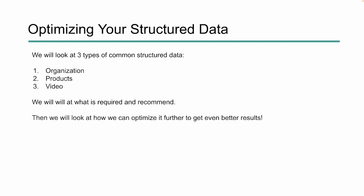So it's good to use the Google guidelines as a base, but we can extend them further and actually optimize our structured data for more optimal results. In this video, we're going to be looking at three common types of structured data: organization, product, and video. We'll look at what's required to earn rich results, what Google recommends, and how we can optimize even further.